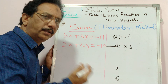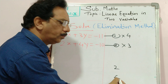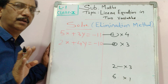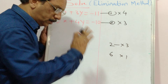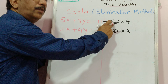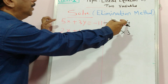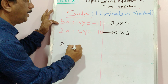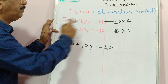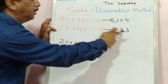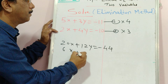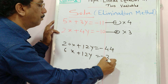If the coefficients are 2 and 6, it is simpler — find the common number. Multiply 2 by 3 and 6 by 1; no need to multiply 2 by 6 and 6 by 2. So, multiply the whole of equation 1 by 4 and the whole of equation 2 by 3. This gives: 20x plus 12y equals minus 44, and 6x plus 12y equals minus 30.